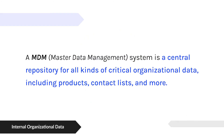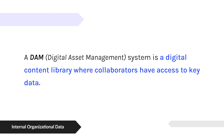Another acronym would be MDM, Master Data Management — it's like a master file of product data or contact lists. Then there's digital asset management, where they have a library of digital assets like photos, video, and stuff like that, that employees can collaborate over and have a library where they're saved and hosted.